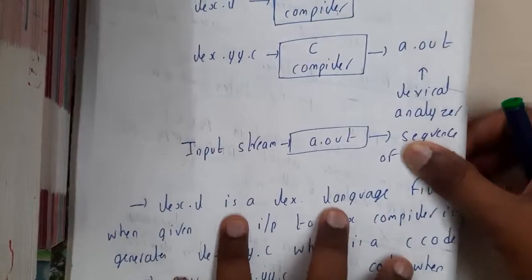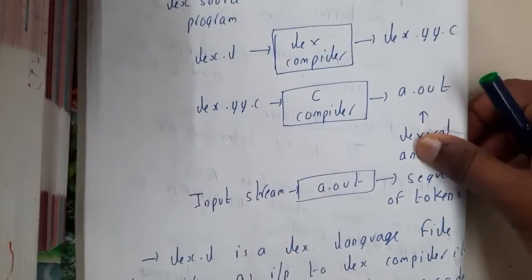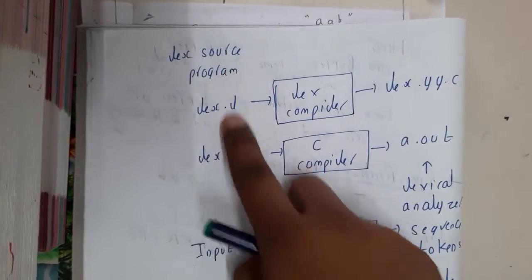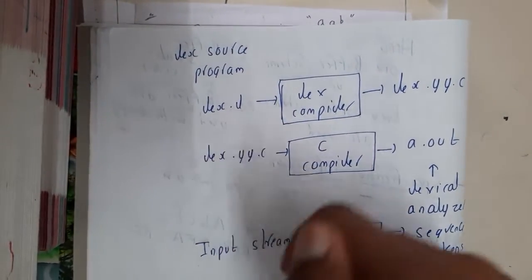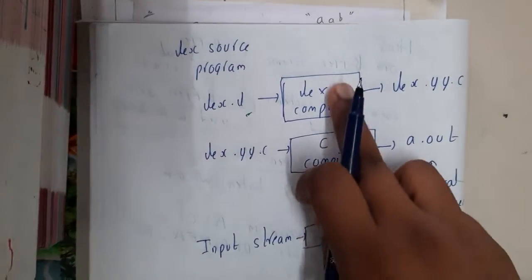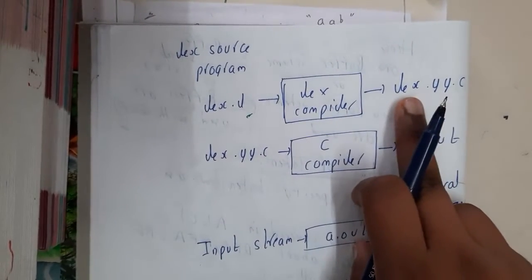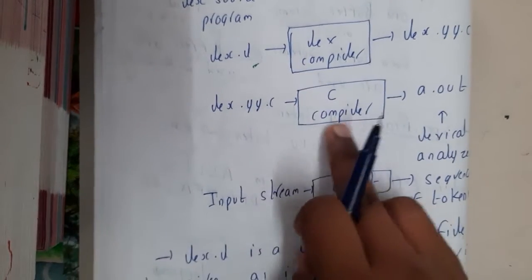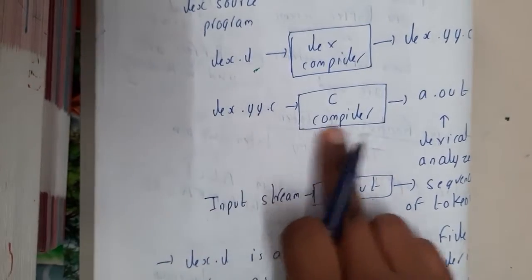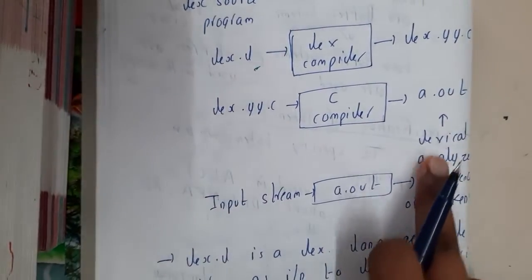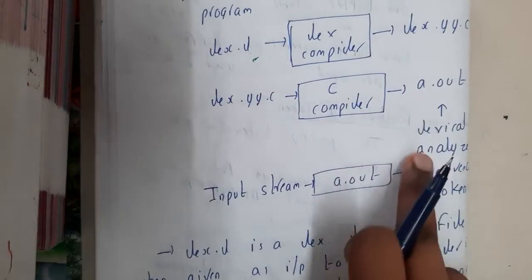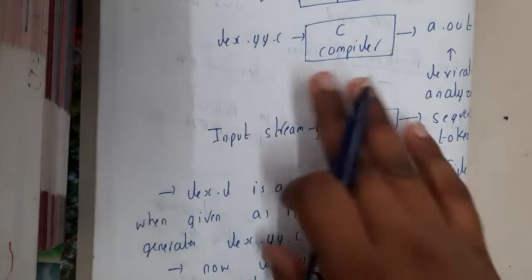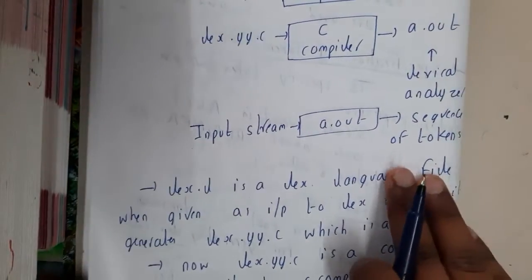The execution steps will be in this way: the Lex source program file, assumed to have extension dot l, is passed into the Lex compiler. It converts it into lex.yy.c — a C file. You can then compile lex.yy.c to get an a.out file, which is our lexical analyzer. Once you give the input string to this a.out, you will get the tokens. This is the whole process.